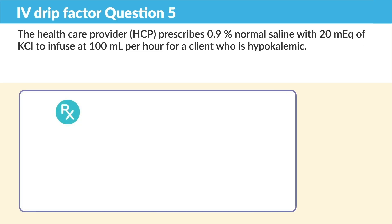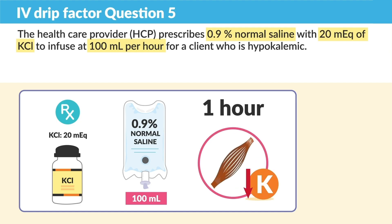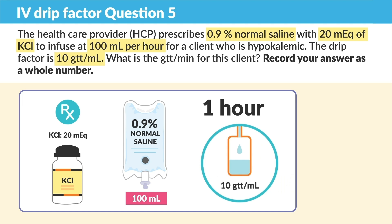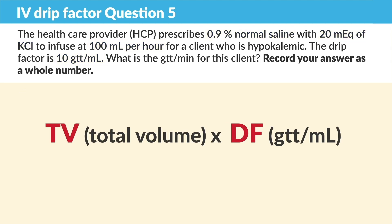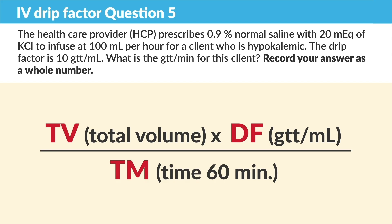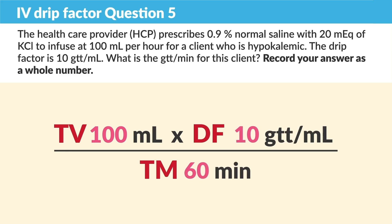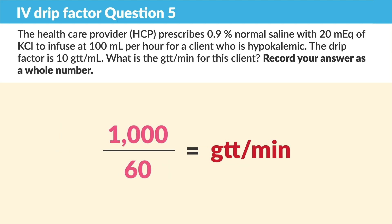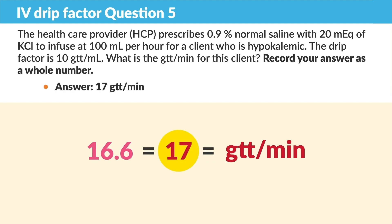Moving on to question five: the healthcare provider prescribes normal saline with 20 mEq of KCL — that's potassium — to infuse at 100 mLs per hour for a client with hypokalemia. The drip factor is 10. What is the drips per minute? Set up the equation: total volume times DF over time. Total volume is 100 mLs times 10 drips per minute over 60 — always remember one hour is 60 minutes. Multiply across: 1,000 over 60, then divide. We get 16.6, and we round up because we can't give a portion of a drop. The answer is 17 drips per minute.